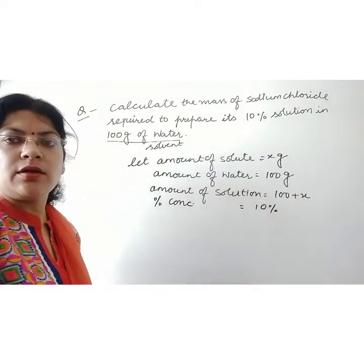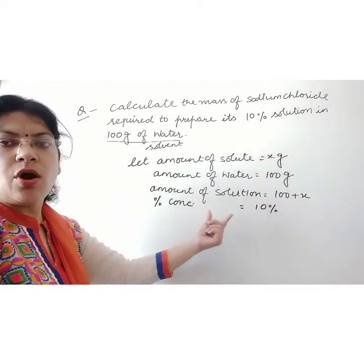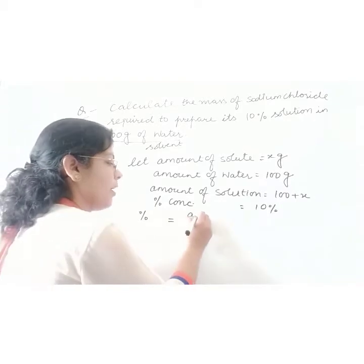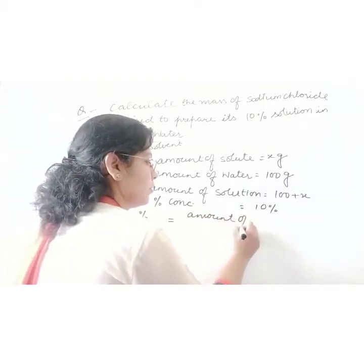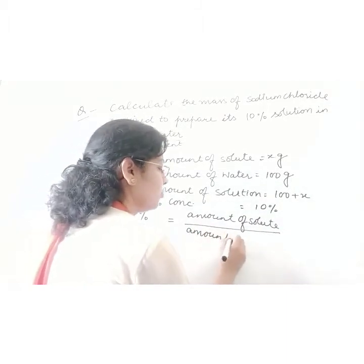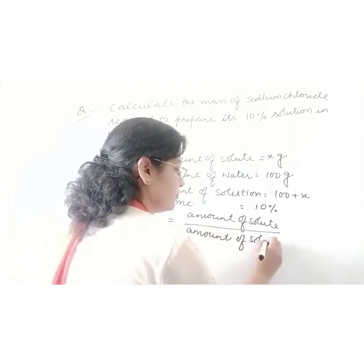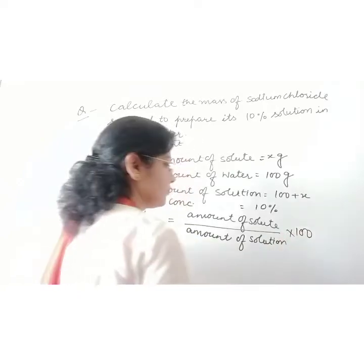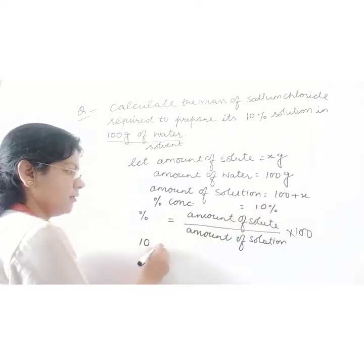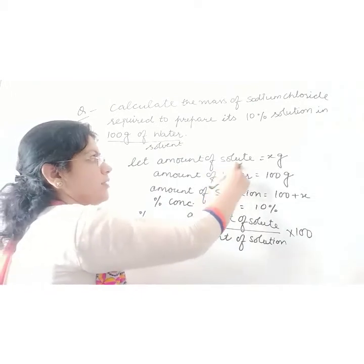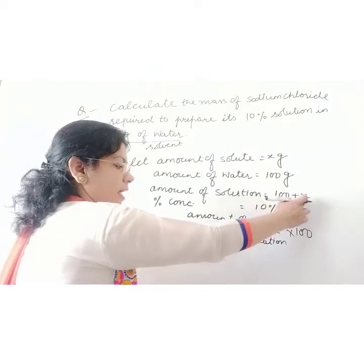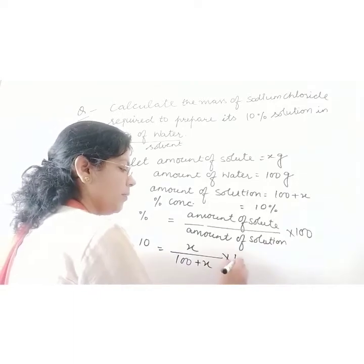Apply the formula for the calculation of concentration. Percentage concentration is equal to amount of solute upon amount of solution, multiplied by 100. The percentage is 10%, the amount of solute is X, and the amount of solution is 100 plus X. Put these values into the formula and multiply by 100.